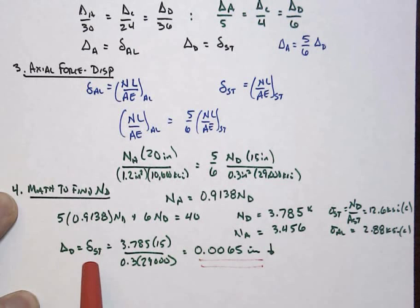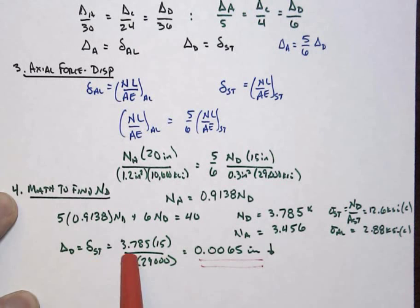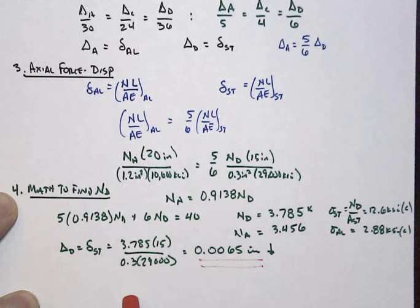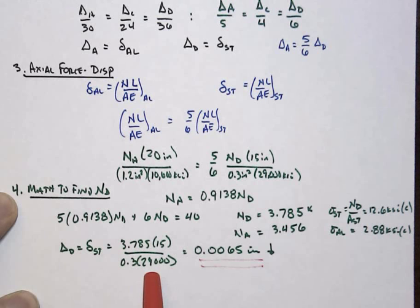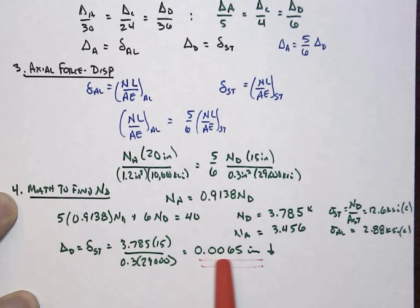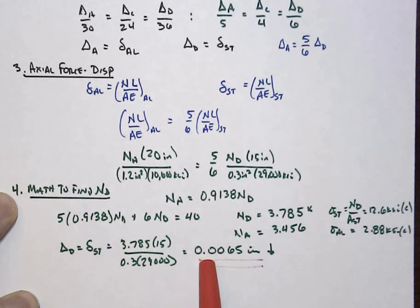We can finally calculate the displacement at D, which equals the deformation in the steel: NL over AE of the steel, so 3.785 times 15 over (0.3 times 29,000 KSI). As is typical for axially loaded systems, we get a very small deformation, and correspondingly a displacement at D of 0.0065 inches going downward.